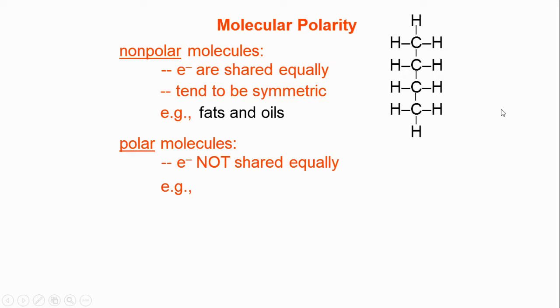Polar molecules don't share electrons equally. Things that are polar are things such as water. They actually have an extra pair of lone pair of electrons, two of them actually, on the oxygen that makes the oxygen more electronegative than the hydrogens. So that's a polar molecule.